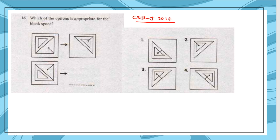The question asks which option is appropriate for the blank space. A figure changes to another figure and we have to figure out what the next one will be. Looking at the figures, there is a triangle with an inner triangle on one side, while on the other side there's a bigger triangle with a line and a circle inside. An easier way to look at it: consider this portion as a notebook.